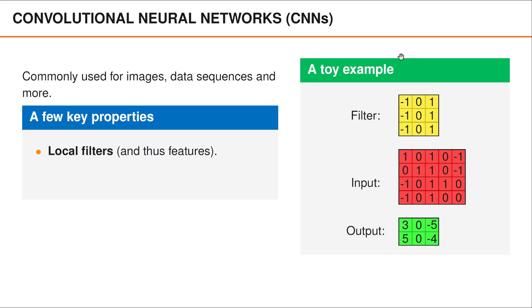For instance, in this toy example, the filter looks for local vertical edges in the input image, which is why the output takes its maximum value 5 when we take the dot product between the filter and the bottom left corner of the image.